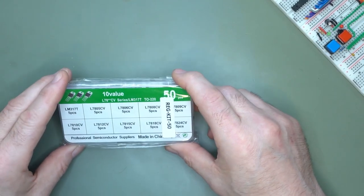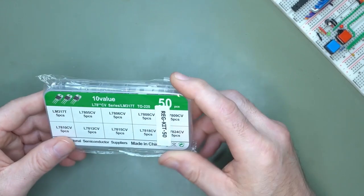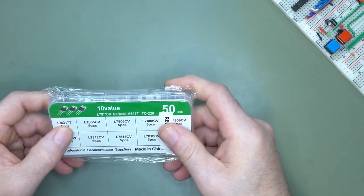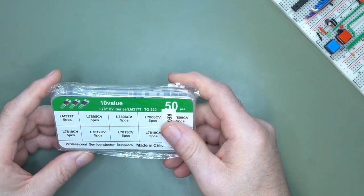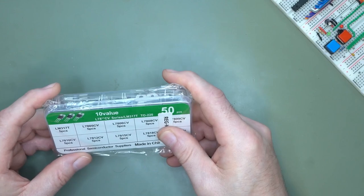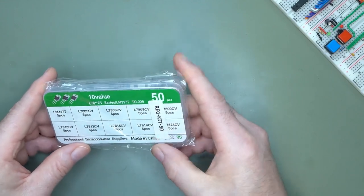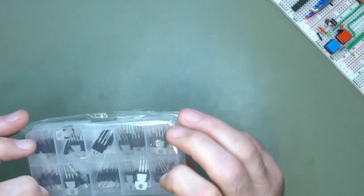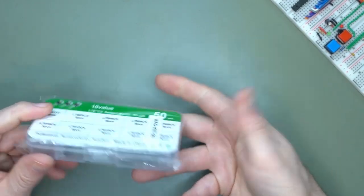Got myself a box of regulators. 50 pieces. You've got your standard LM317, 7805, 06, 08, 09, 10, 12, 15, 18, 24. It's a tier you need that as a base, right?